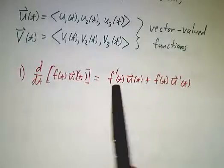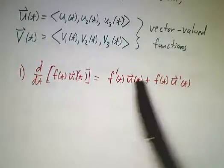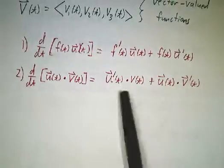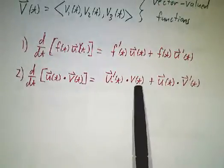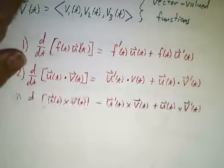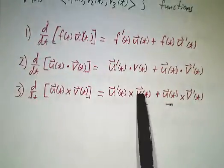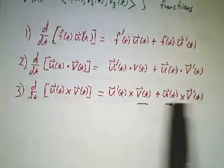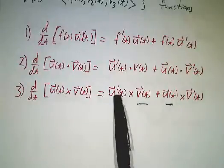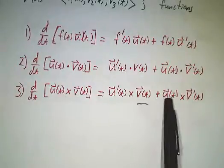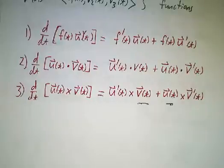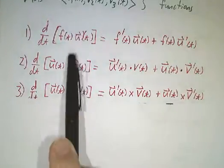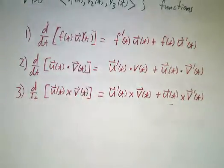That works when f is a scalar and u is a vector, and it works when u and v are vectors in a dot product, and it works when u and v are vectors in a cross product. It's always derivative of the first times the second, plus the first times the derivative of the second — where 'times' means multiplication, dot product, or cross product, whatever the setting.